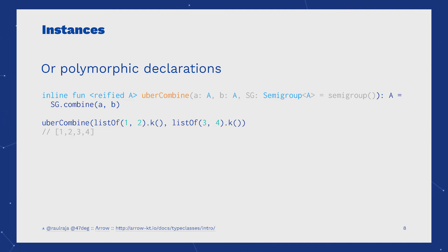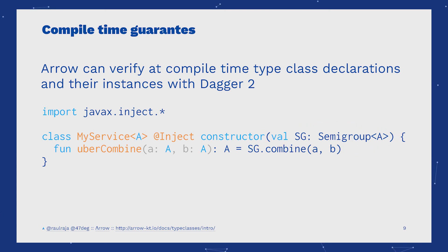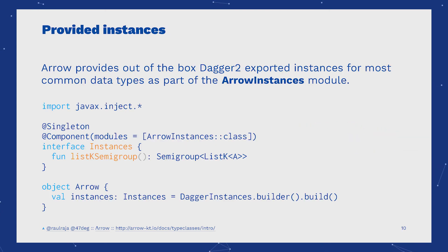With Dagger2, we have compile-time verification of the injected type class instances. Aero provides a Dagger2-ready module with all of the Aero instances ready to be used.